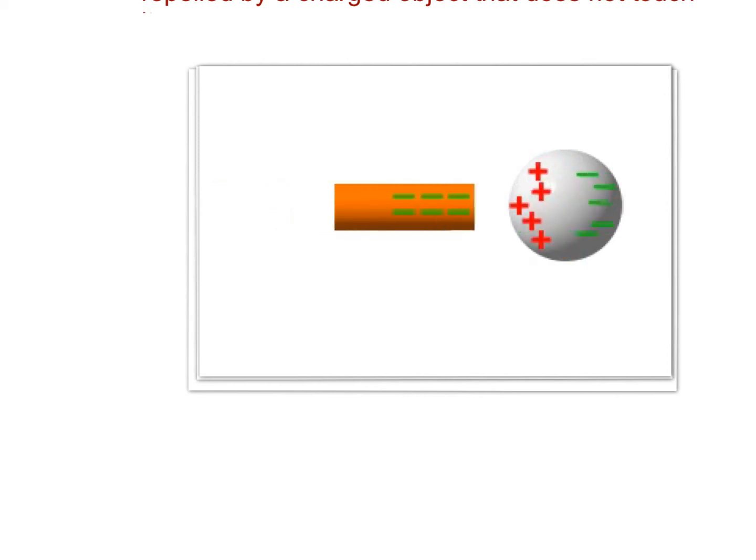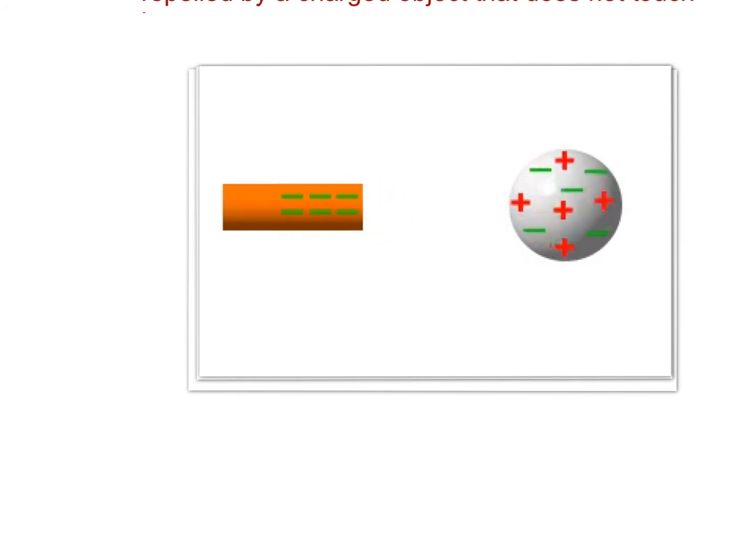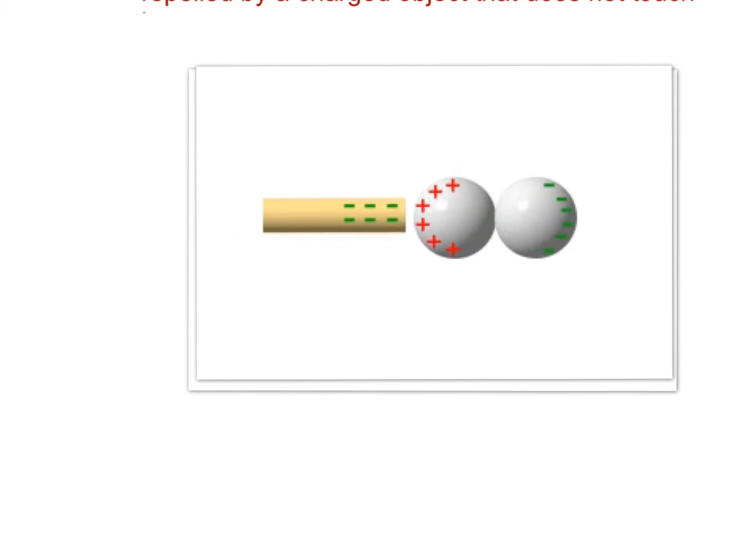In the first induction example, a negatively charged rod comes close to a neutrally charged sphere. The electrons move to the opposite side, causing a positive side and a negative side to be created. In a second example, two neutral spheres are touching. Bringing the negative rod near causes electrons to be repelled to one sphere, and the other sphere stays positive. When separated, one sphere stays negative and the other stays positive.